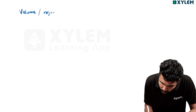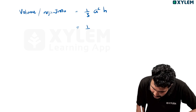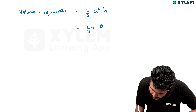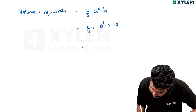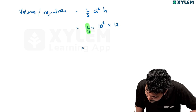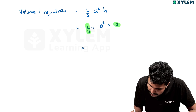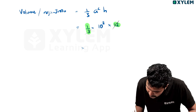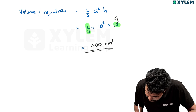Volume. That is: Volume equals 1 by 3 times A squared times h. A squared is 10, 10 squared is 100. h equals 12. So 1 by 3 times 100 times 12 equals 400 cm³.